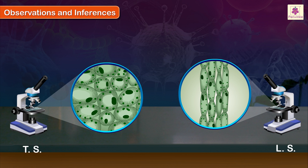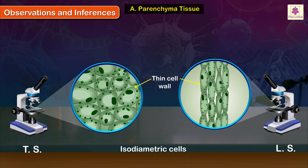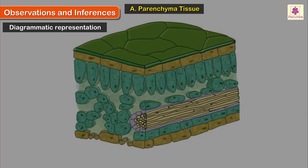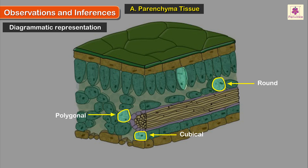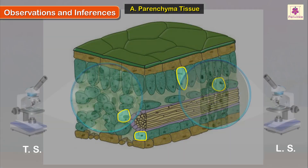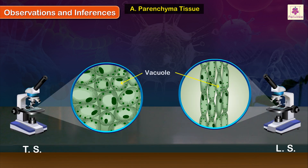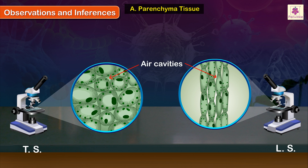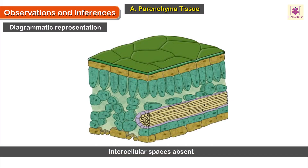Observations and Inferences. A. Parenchyma Tissue: It is a simple tissue having isodiametric cells — cells having equal dimensions. Cells in the tissue have thin cell walls. The cells may be round, cubical, polygonal, or elongated in shape. Each cell has one or more large-sized vacuoles. Each cell has a prominent nucleus in the granular cytoplasm. Chloroplasts may be present in the cells. Air cavities may be present in the cells. Intercellular spaces are usually present but may be absent in certain types of cells.